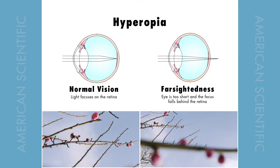For those with far-sightedness, when light enters the eye the focus falls beyond the eyeball and the light does not reach the retina in focus. This is often referred to as hyperopia.